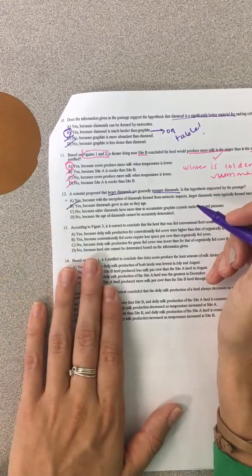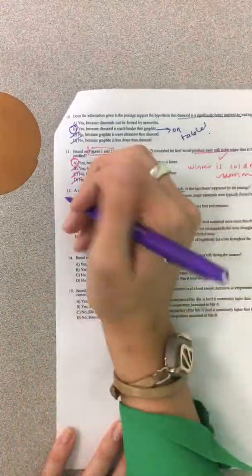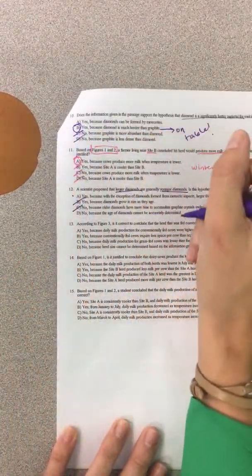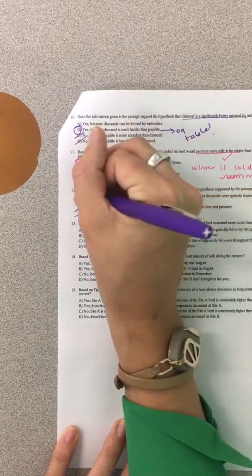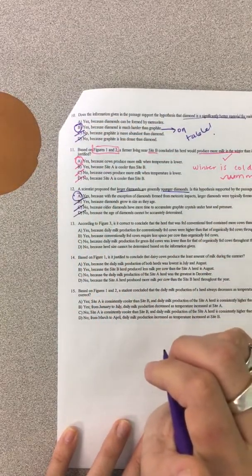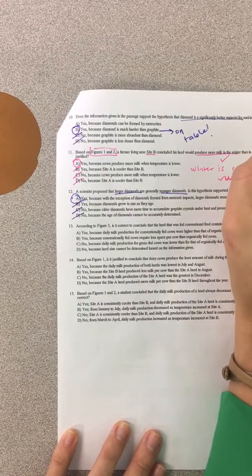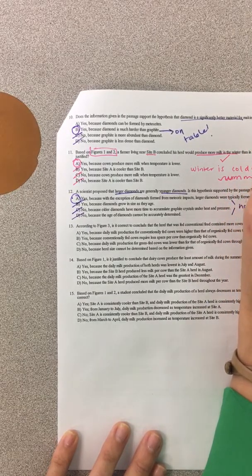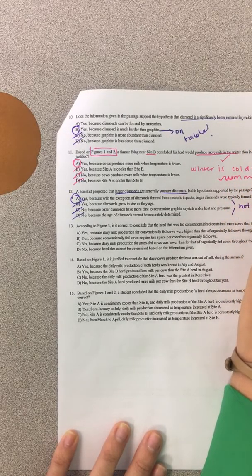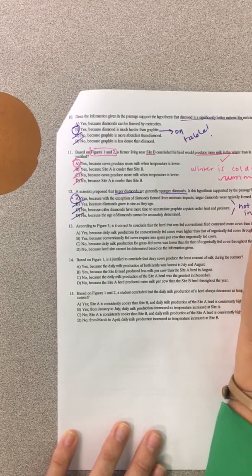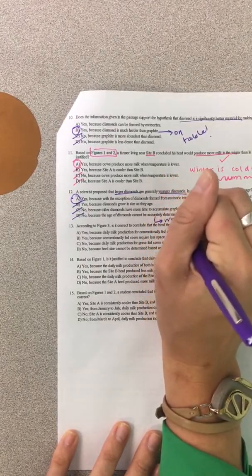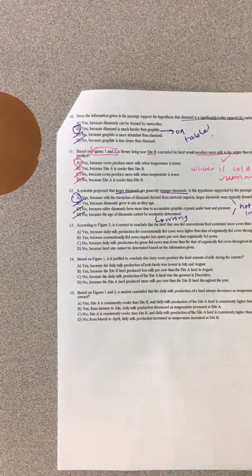No, because older diamonds have more time to accumulate. They don't say that either. No, because the age of diamonds, well we know that's wrong because it gives us the age. So the answer by default is A. So these are not mentioned in passage. And then this answer choice is just wrong. Because we do have a list on the table.